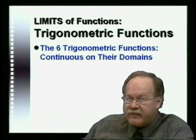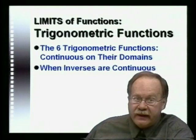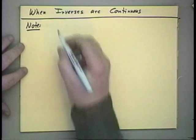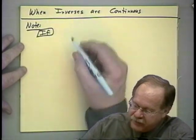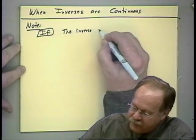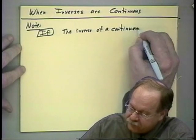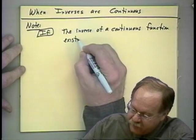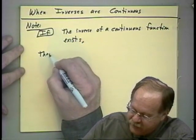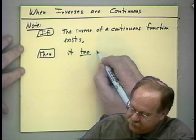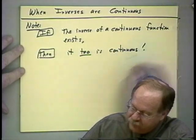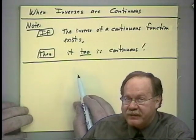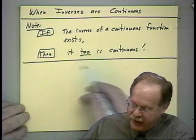Now we'll ask: when are inverses continuous? We're introducing this here because we'll be using it later. Here is the note, written as an if-then statement: if the inverse of a continuous function exists — so you're guaranteed to have a function that has an inverse — then it too is continuous. This is like another operation you can perform on a continuous function.